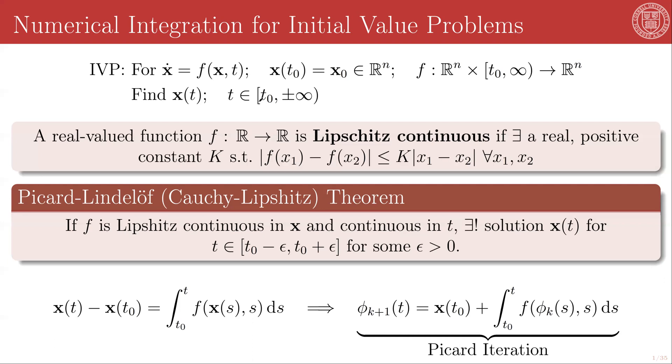The first question we have to ask ourselves is, how do we know whether there exists a solution at all? The answer to this is given by something called the Picard-Lindelof, or also the Cauchy-Lipschitz theorem. This theorem states, if this function f, which gives the time derivative of the state, is Lipschitz continuous in x and continuous in t, then there exists a unique solution for x(t), where t is in some range [t₀ - ε, t₀ + ε] for some ε > 0.